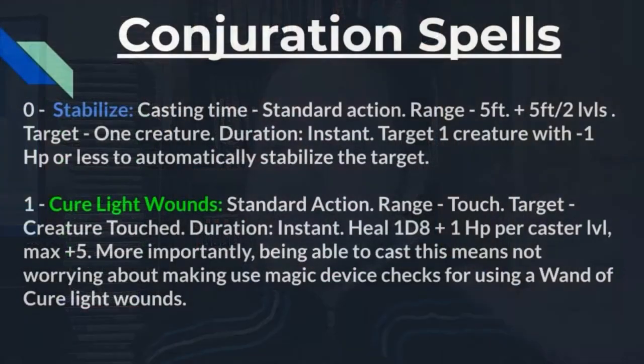Now let's cover the conjuration spells. Coming in at zero level, standing head and shoulders above other zero-level spells we've covered so far, we have Stabilize. Its casting time is a standard action, range is 5 feet plus 5 feet for every two caster levels, target is one creature, and duration is instant. You target one creature with minus one hit points or less to automatically stabilize them and keep them from dropping to negative ten — a really solid spell.